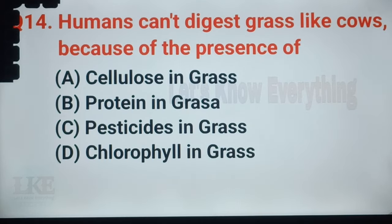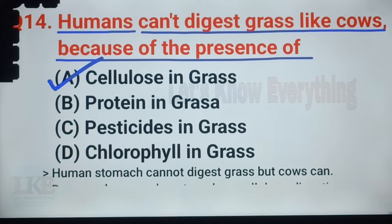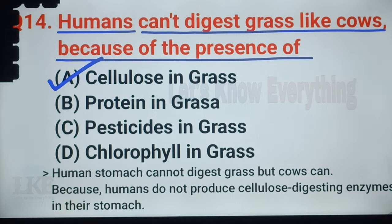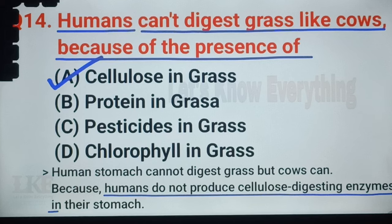Question number 33: humans cannot digest grass like cows because of the presence of cellulose in grass. Human stomachs cannot digest grass, but cows can, because humans do not produce the cellulose-digesting enzyme in their stomach.